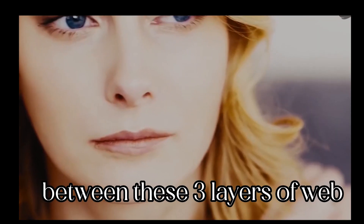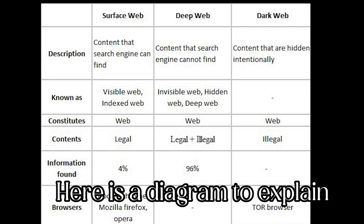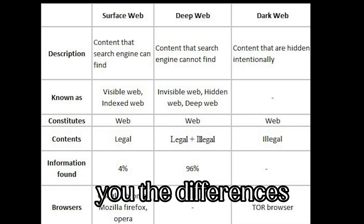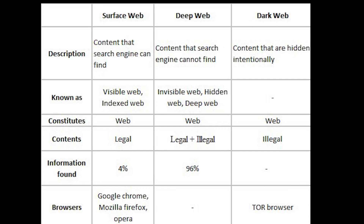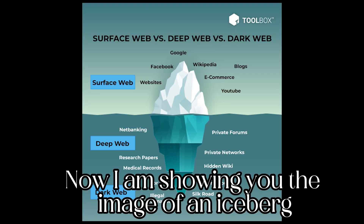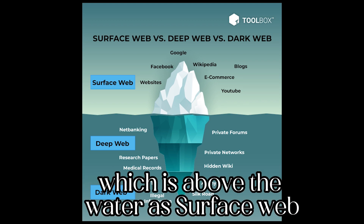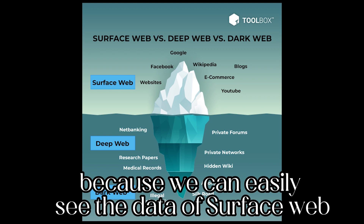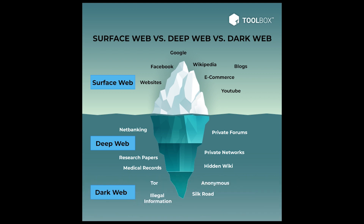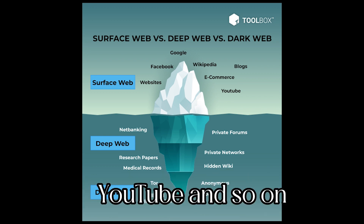There are a lot of differences between these three layers of web — here is a diagram to explain the differences. I am showing you the image of an iceberg. We can relate the visible part of the iceberg, which is above the water, as the surface web, because we can easily see the data of the surface web. Some examples of surface web are Google, Wikipedia, blogs, e-commerce, YouTube, and so on.